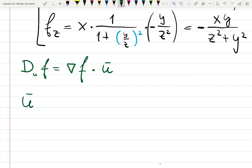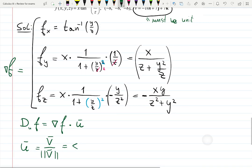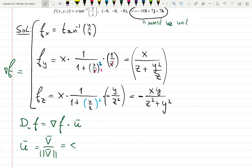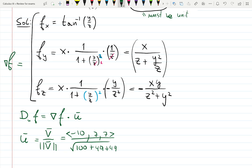But u will be v over magnitude of v, right? Vector over its magnitude to make it unit. That will be, so let's see, that will be -10, 7, and 7, divided by square root of 100 plus 49 plus 49, right?